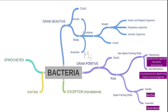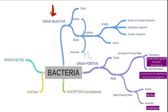Prior to talking about Nocardia asteroides in detail, let me tell you about bacterial classification. Bacteria are further classified into spirochetes, and on the basis of acid fast staining into acid fast bacteria, with an exception being Mycoplasma. Bacteria are also classified on the basis of gram staining into gram negative and gram positive. We are not concerned here with gram negative, so let's talk about gram positive.